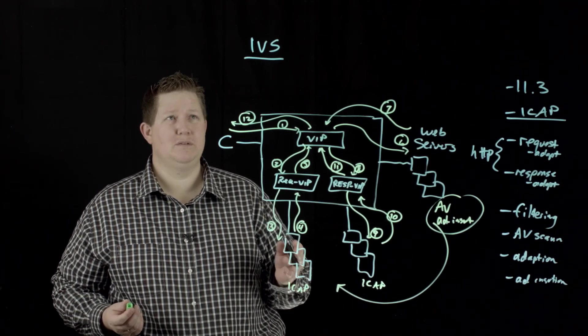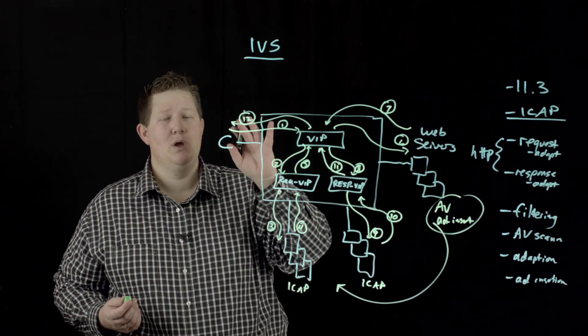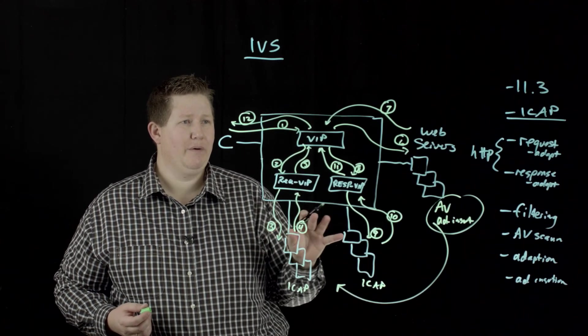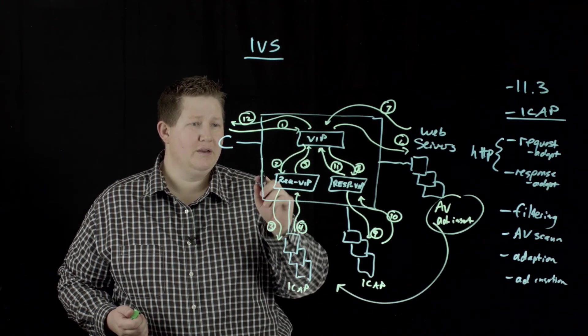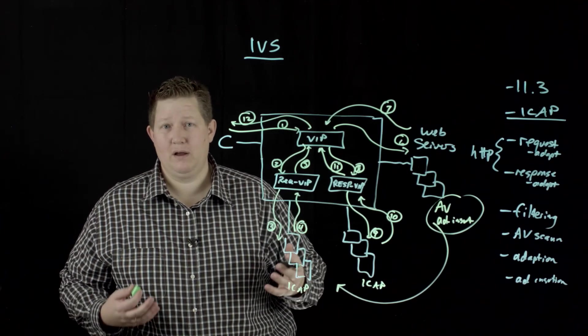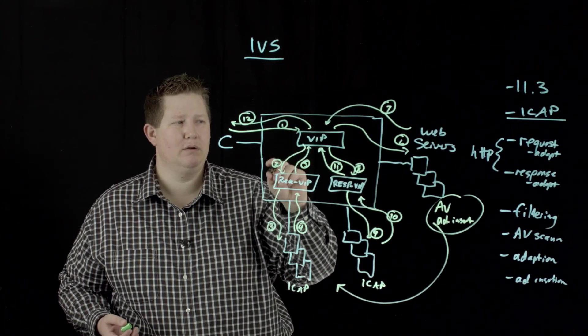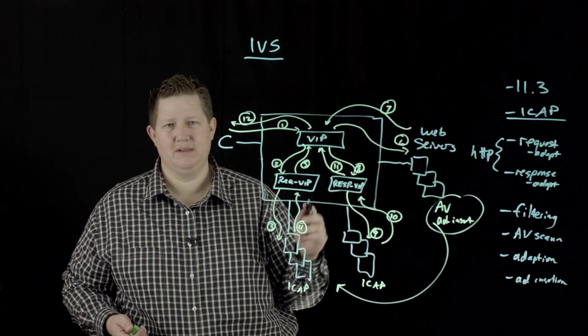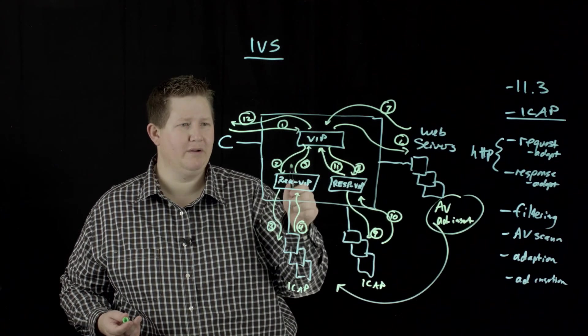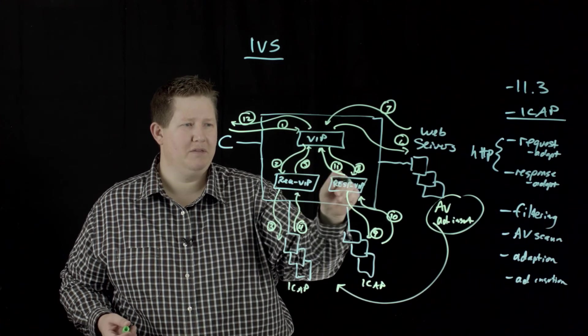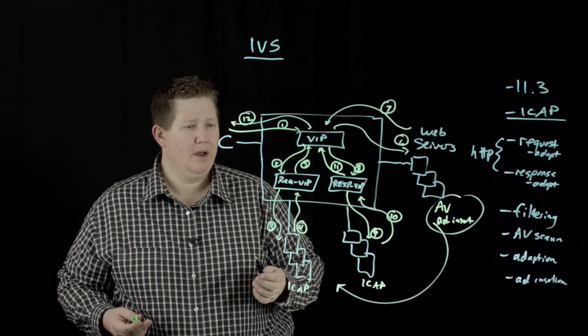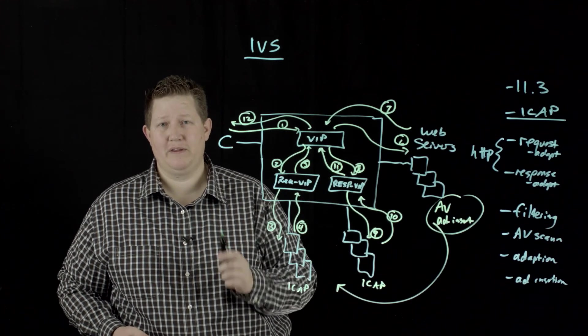So hopefully this has been helpful to understand what an internal virtual server is and how it works. Internal virtual servers are not listening on anything. They won't listen on any VLANs. You have to configure the request and response adaption profiles in order for these to receive traffic. Thanks, and we'll see you out there in the community.